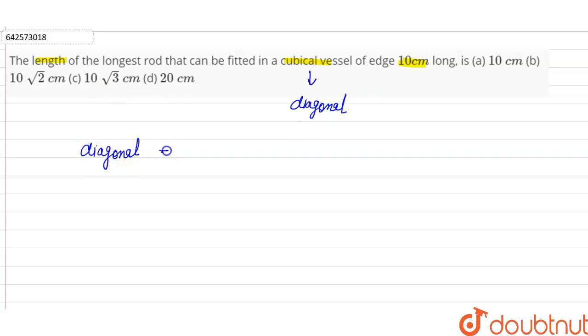The diagonal of cube is equal to root 3 L, where L is the side length. So it will be root 3 times L. Since length is given as 10 centimeter, the diagonal of the cube will be equal to 10 root 3 centimeter.